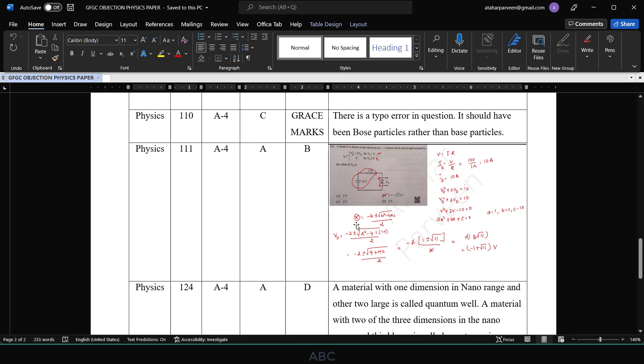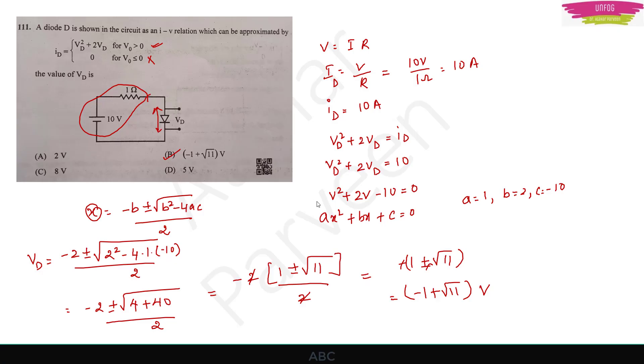The next question is 111. This was regarding this circuit, the diode was shown and this IV relation which can be approximated, they have given a relation and wanted us to find the value of Vd, the output voltage. This is the procedure I have done and I got option B, you can see my part 3 video in this YouTube channel. Actually this is how I solved with the quadratic equation and I am getting option B. But someone told me that option A is the right answer but I don't have explanation for option A. I have explanation for option B, so I believe that option B is the right option. In the provisional key they have given option A, so I am including this question in the objection list.